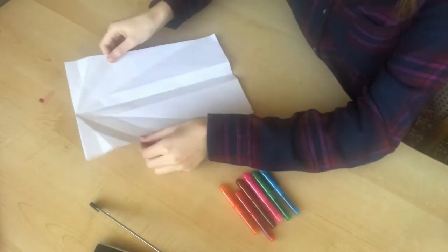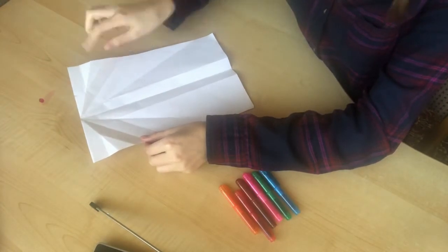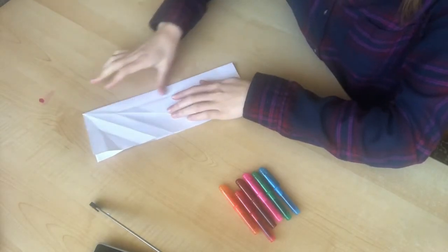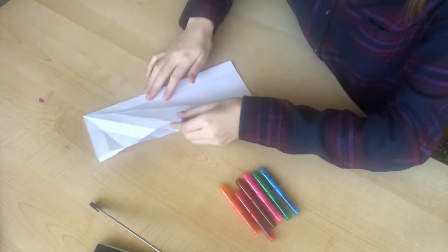The first step is to fold our piece of paper in half down the middle just like this. Make a good crease, then we unfold it again.